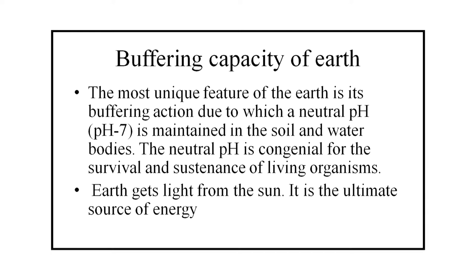The last condition for sustaining life on Earth is buffering capacity. The most unique feature of the Earth is its buffering action, due to which a neutral pH—that is pH 7—is maintained in the soil and water bodies. The neutral pH is congenial for the survival and sustenance of living organisms. Earth gets light from the sun. It is the ultimate source of energy.